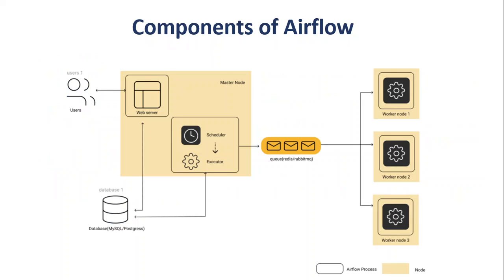The next thing is the components of Airflow. Before we jump into the various components, I want to inform you that it's a multi-node structure, as shown in the picture. But you can also deploy Apache Airflow on a single node. The four main components of Airflow are: web server, executor, scheduler, and the database — also called the meta store.